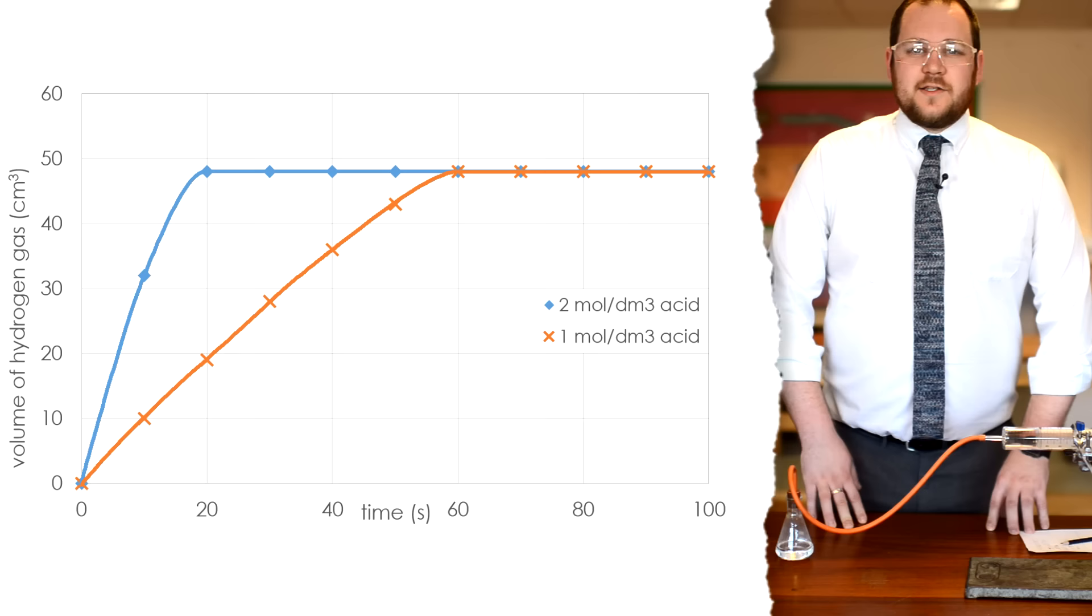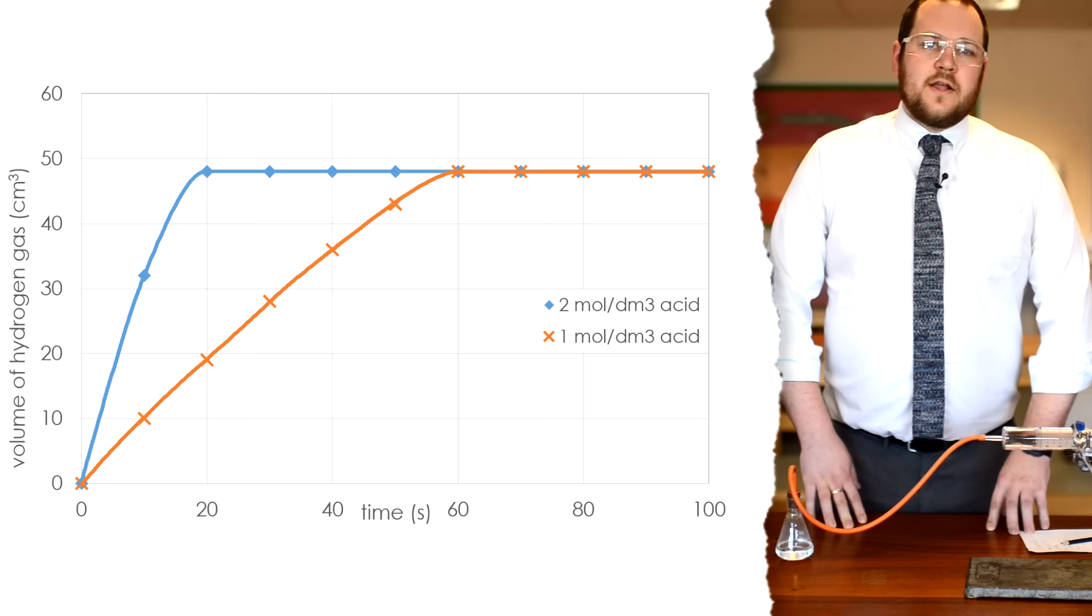As you can see the 2 molar hydrochloric acid has a much steeper curve than the 1 molar hydrochloric acid, therefore has a faster rate of reaction.